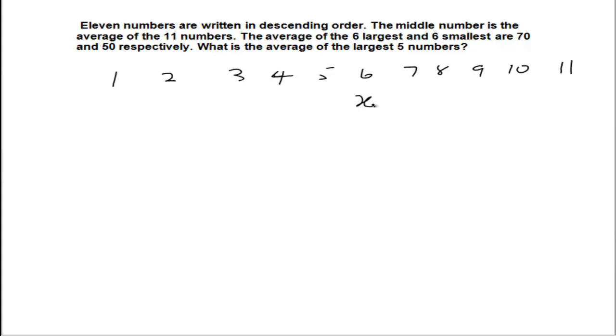They say the average of the largest 6 numbers, because it's descending order, the average of the first 6 is 70. So the total of the first 6 is 70 times 6, which is 420. Then they say the average of the smallest 6 is 50. So the total of the smallest 6 is 50 times 6, which is 300.